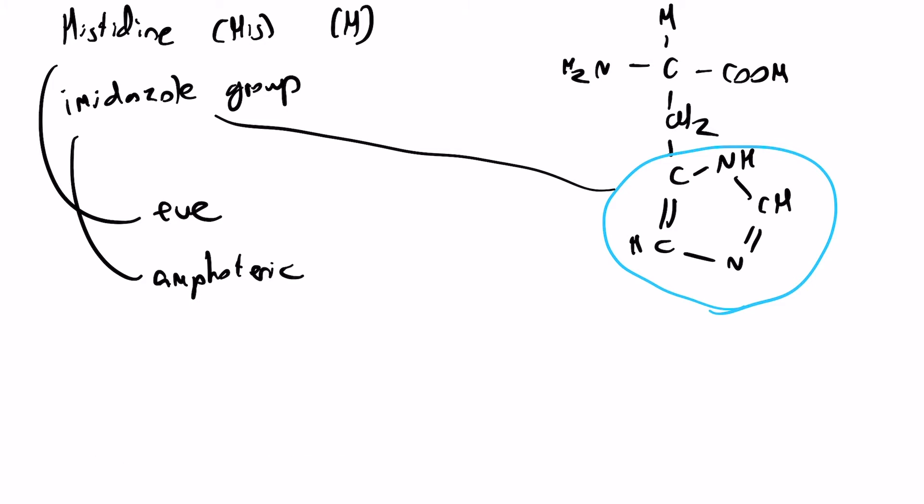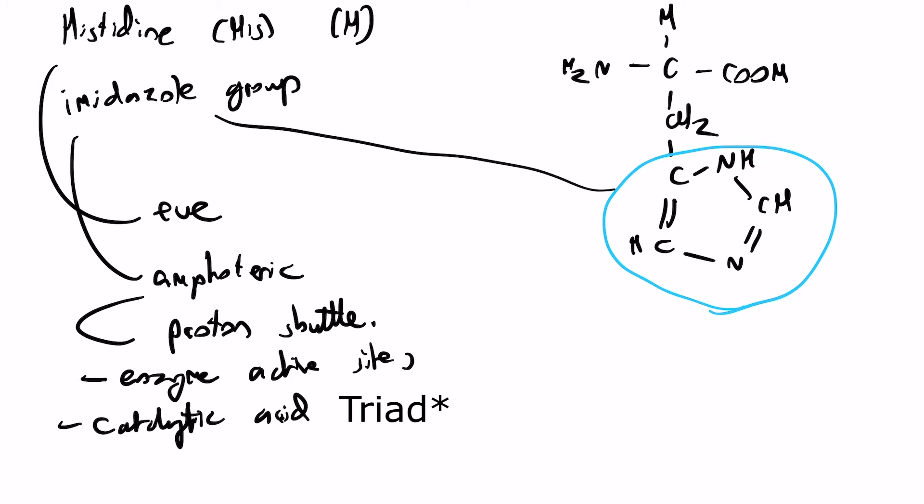So it can behave both as an acid or a base. And basically this is really important because in catalytic mechanisms, histidine can act as basically a proton shuttle. So it can move a proton around, and you'll see it come up in quite a few different enzyme active sites. And I did mention about the catalytic triad when talking about serine, but the base in the catalytic triad is usually actually histidine.